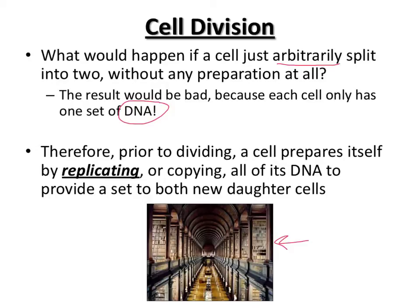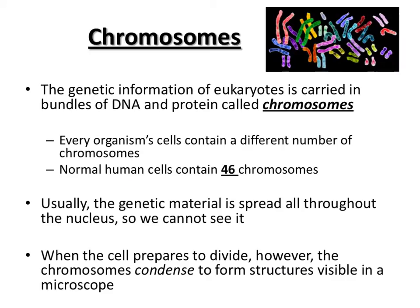Cells do the same thing. Before they divide, they will replicate or copy their DNA, so they have two copies for just a few moments, which then separate evenly into the two daughter cells. This is maybe the most important preparation step — copying the DNA before making the two new cells.